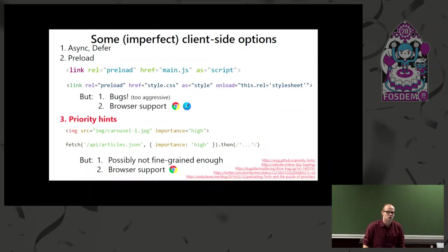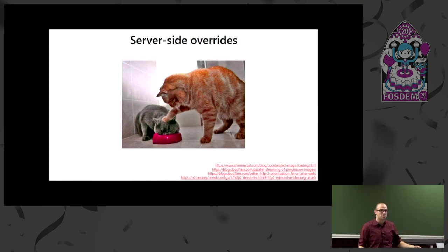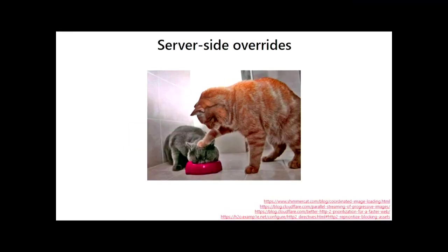Maybe you're helped with these client-side features. But if not, there is still a big red panic button you can push to make everything better, which is using server-side overrides. Because up until now we've been talking about what the browser wants — but it's of course the server that has to send the data to the browser. So if the server thinks what you're telling me isn't right and I know better, it can just ignore what the browser is telling it and stream the resources in the order it thinks is best. Sounds fantastic, but it's actually very complex in practice.